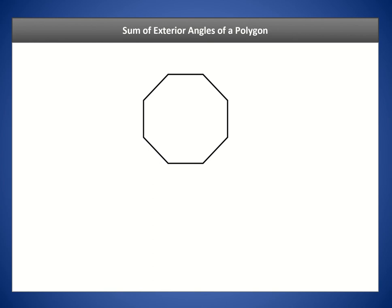Now we'll shift from interior angles to exterior angles of a polygon. Exterior angles are formed by extending each side of the polygon and taking the shortest angle to the next side — not the full 180, just the smaller angle. You repeat this for all the angles to get all of the exterior angles. If you add up all these exterior angles you get a very specific number, and it does not depend on the number of sides.